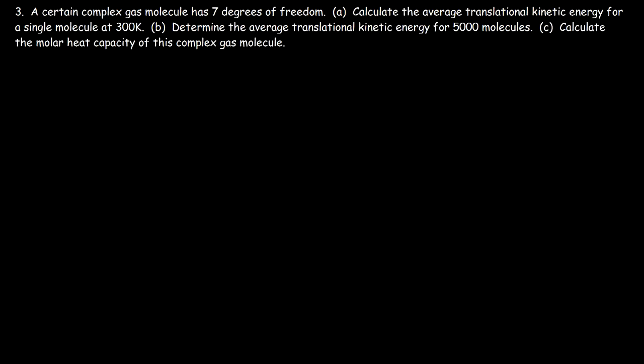Problem 3: a certain complex gas molecule has 7 degrees of freedom. Calculate the average translational kinetic energy for a single molecule at 300 kelvin. You need to be familiar with the principle of equipartition of energy, which states that each velocity component of a gas molecule has an average translational kinetic energy of (1/2)k_B·T, where k_B is Boltzmann's constant and T is absolute temperature.